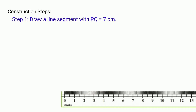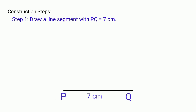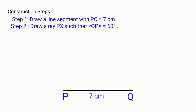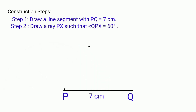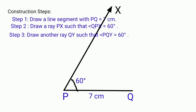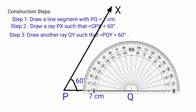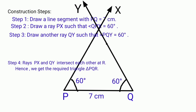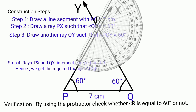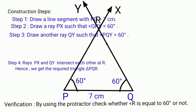Construction steps. Step 1: Draw a line segment PQ equal to 7 cm. Step 2: Draw a ray PX such that angle QPX equals to 60 degrees. Step 3: Draw another ray QY such that angle PQY equals to 60 degrees. Step 4: Rays PX and QY intersect each other at R. Hence we get the required triangle PQR. Verification: By using the protractor, check whether angle R is equal to 60 degrees or not.